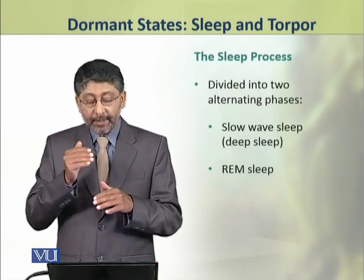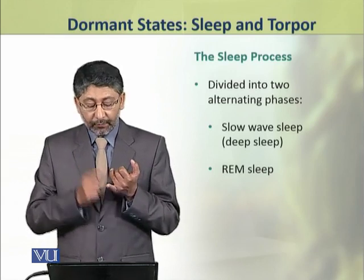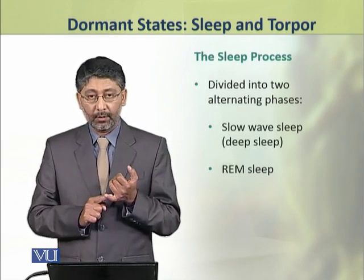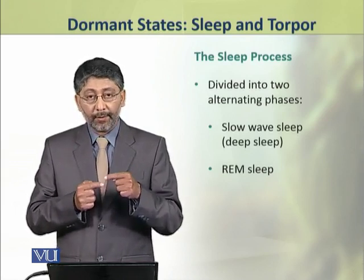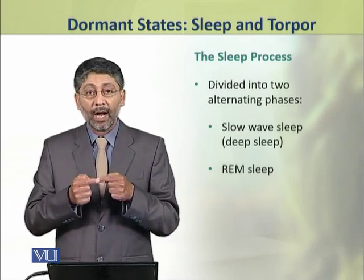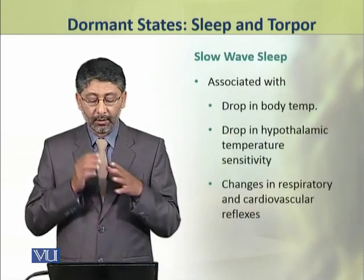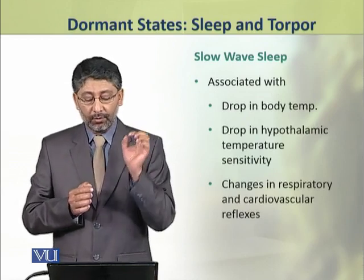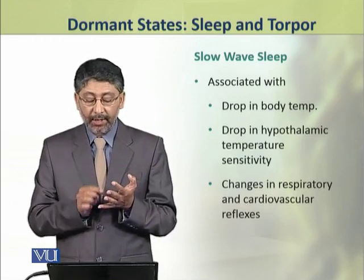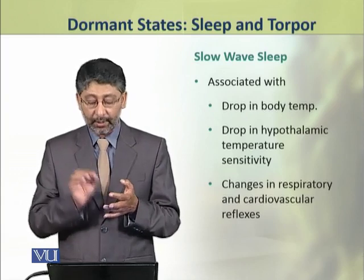The process of sleep is divided into two alternating phases. The first phase is slow wave sleep, which is called deep sleep. The second phase is REM sleep or rapid eye movement sleep. Both these patterns alternate with each other many times during one sleeping shift. The slow wave sleep is associated with a drop in body temperature, a drop in hypothalamic temperature sensitivity, and changes in respiratory and cardiovascular reflexes.